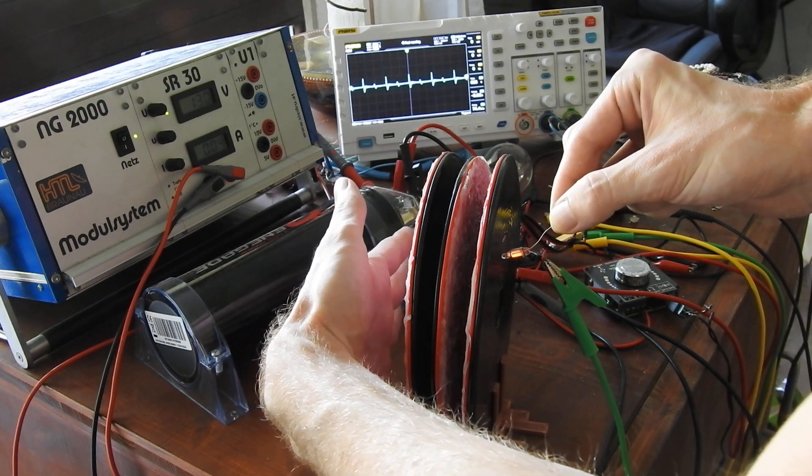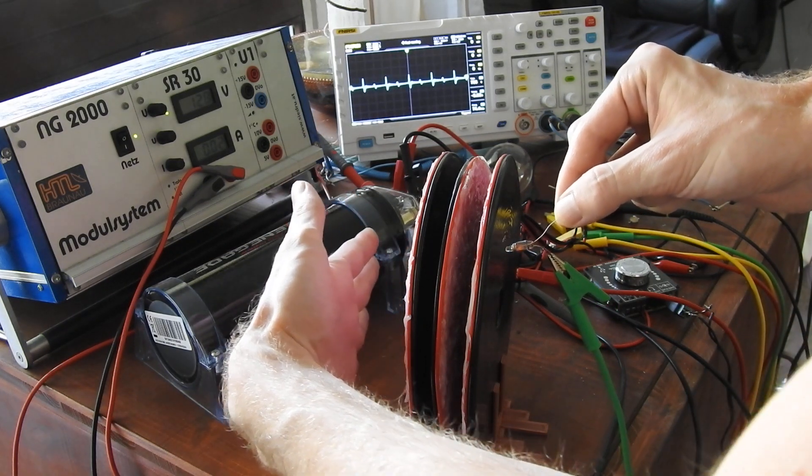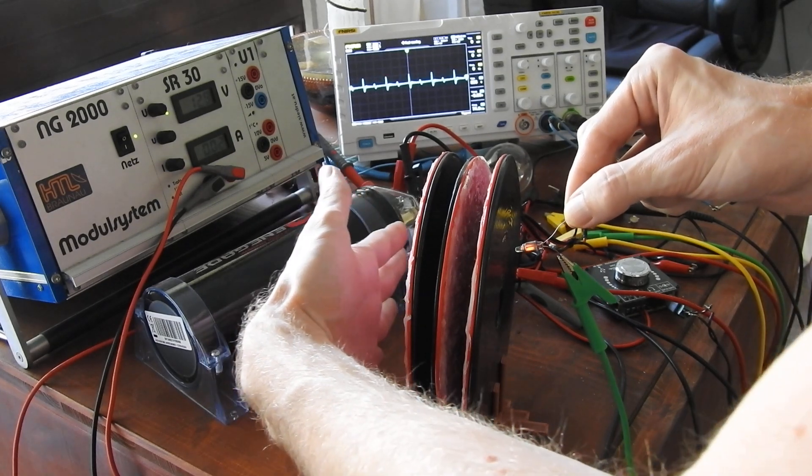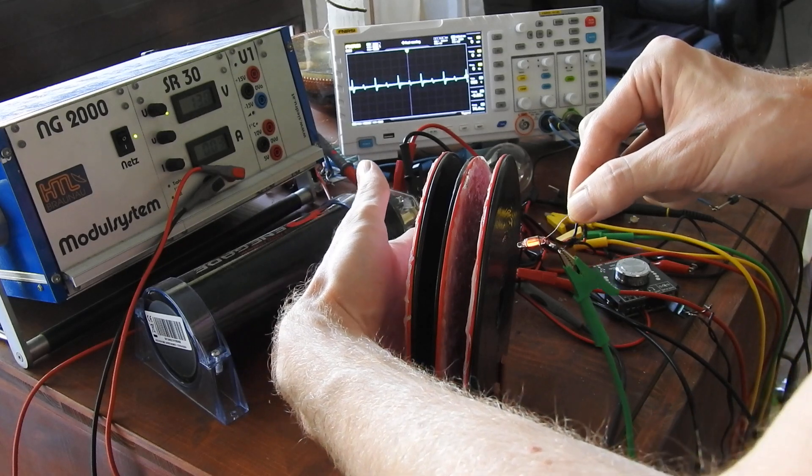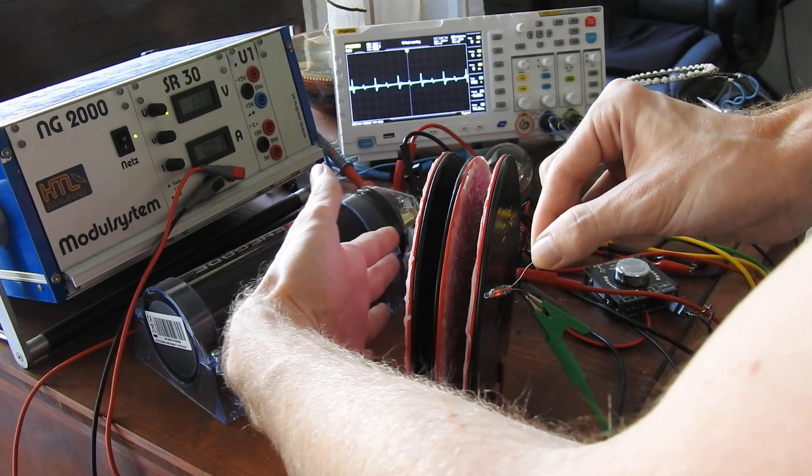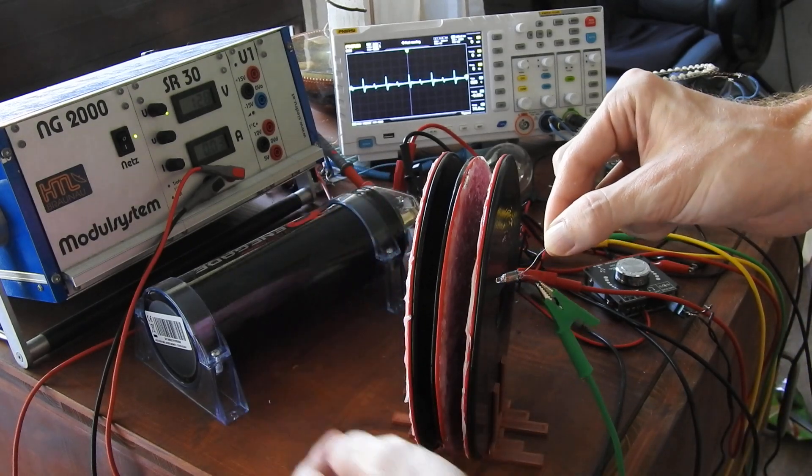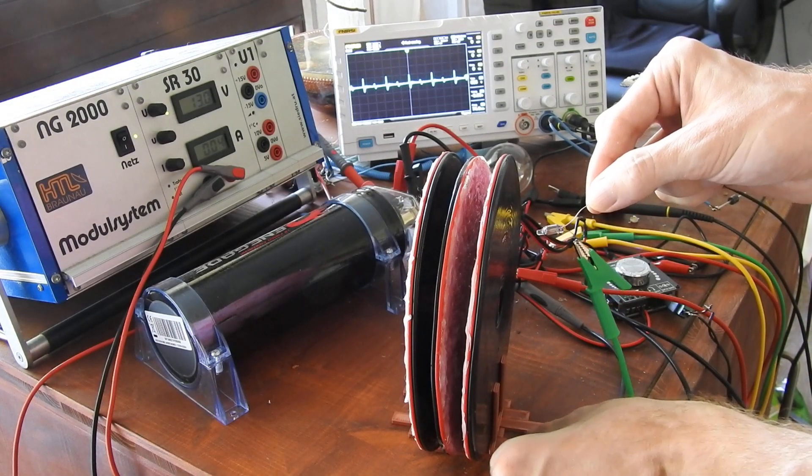But now the distance, or the reach, is further away from the coil, where it still lights up when I come closer with my hand. Like this. So this is a pretty cool trick to visualize the field.